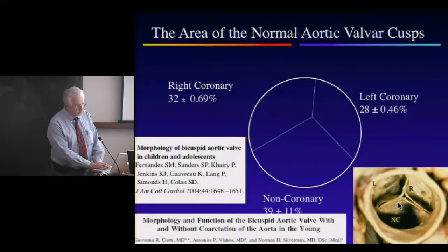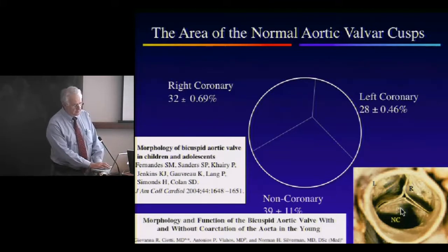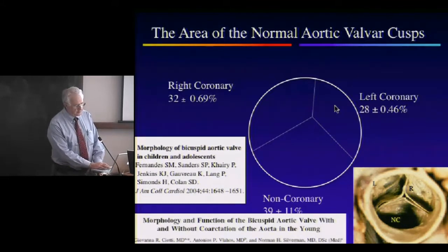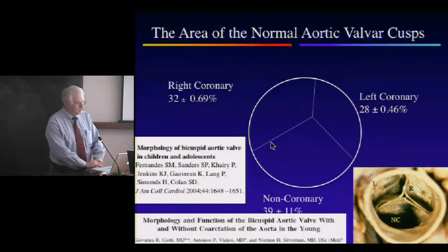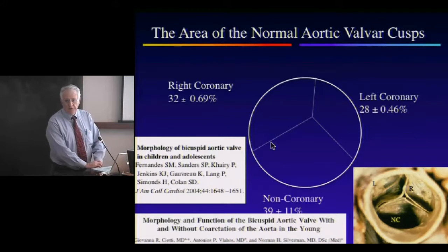Here's a normal patient viewed from above. The non-coronary, the left coronary, and the right coronary cusps are visible echocardiographically. You can see that the areas of these cusps as a percentage of the total area is completely different, with the non-coronary usually being the biggest cusp and the left coronary cusp usually being the smallest.